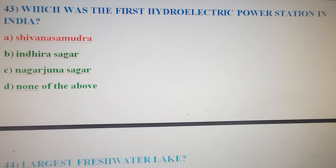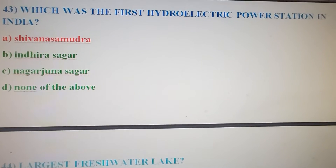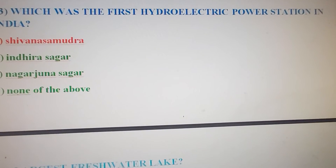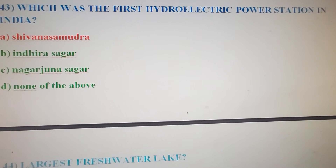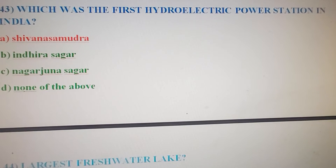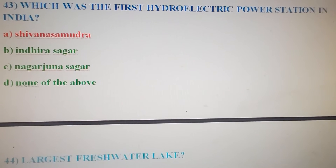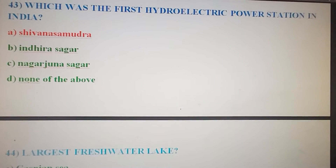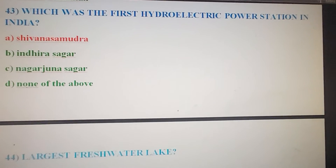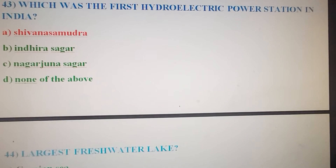Next question: Which was the first hydroelectric power station in India? Option A: Shivasamudra. Option B: Indira Sagar. Option C: Nagarjuna Sagar. Option D: None of the above. The correct answer is Option A — Shivasamudra is the first hydroelectric power station in India.